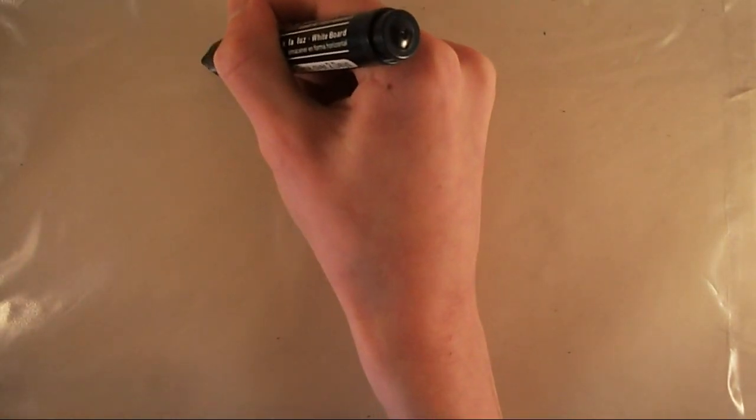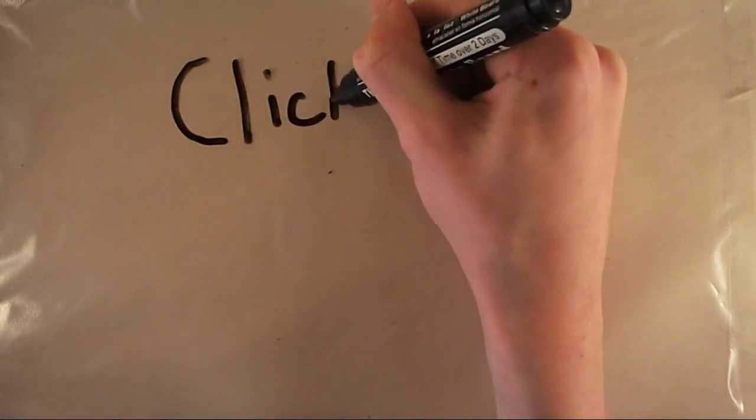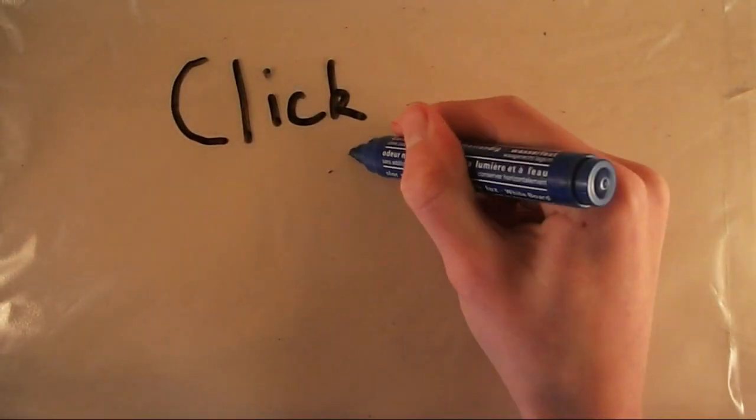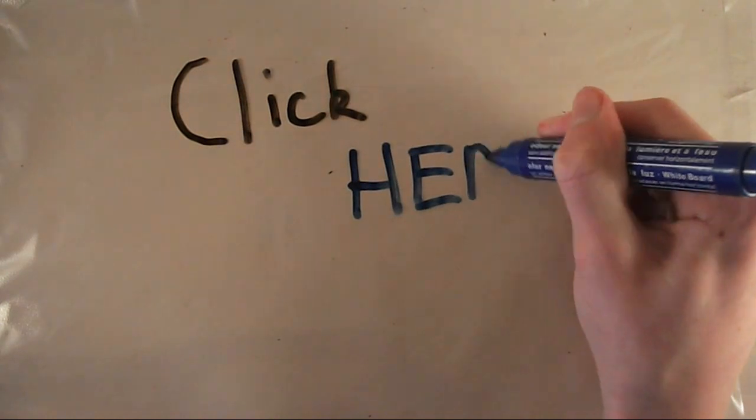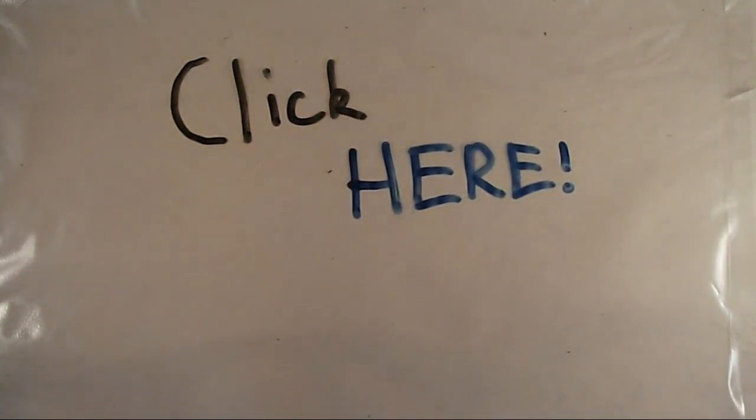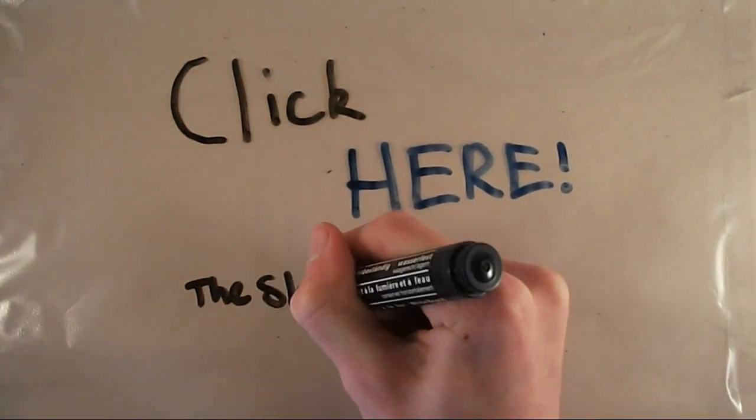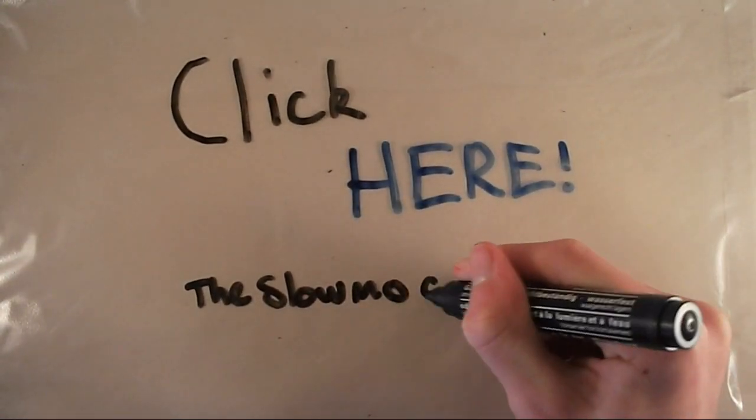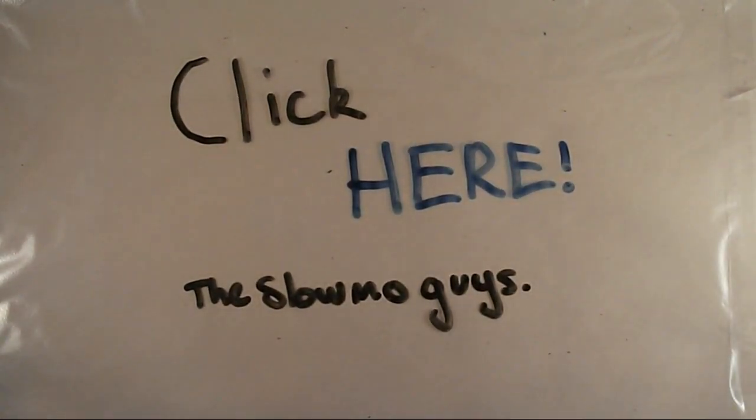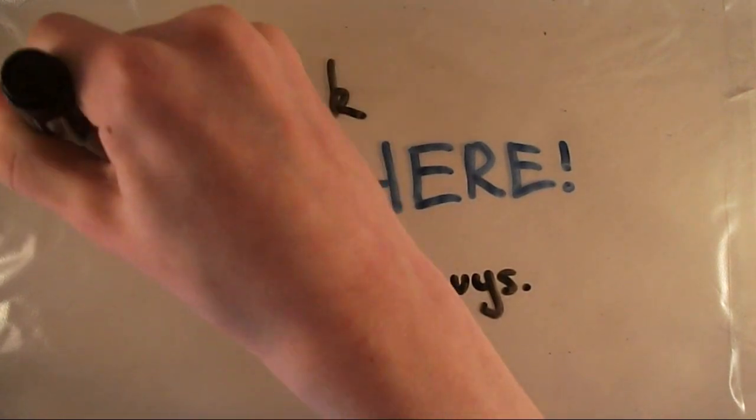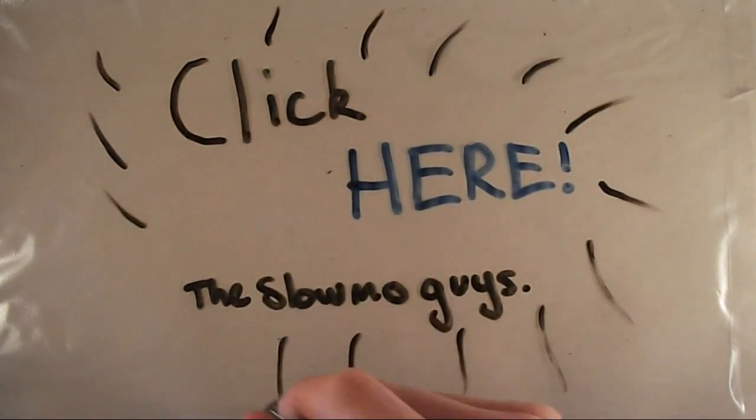There's a great video by the Slow Mo Guys which I recommend you check out. They've recorded a popcorn popping at 10,000 frames per second and then slowed down the video 400 times. It shows the moisture escaping, causing the shell in the kernel to break. It's a great video to check out if you're wanting to see how popcorn actually pops in slow motion and it's a really interesting watch.